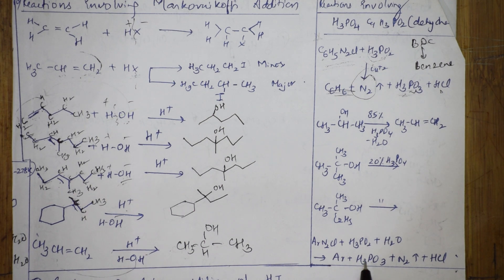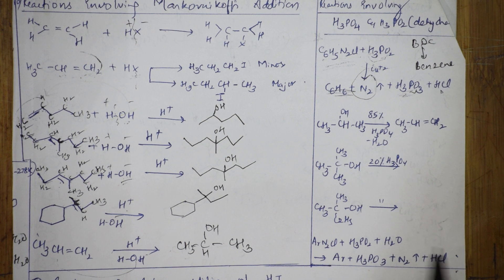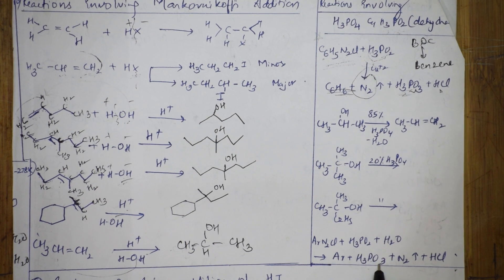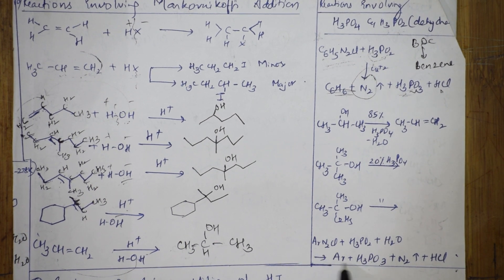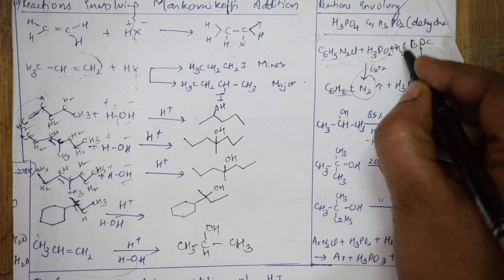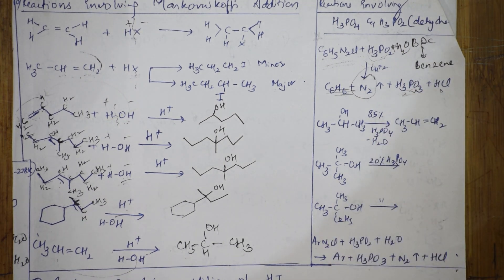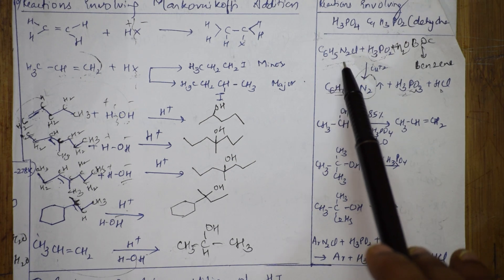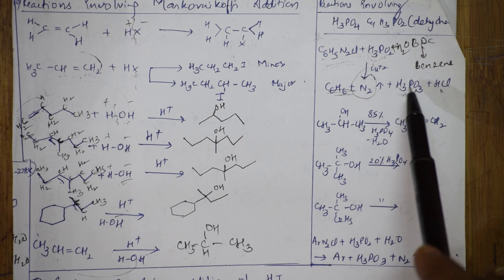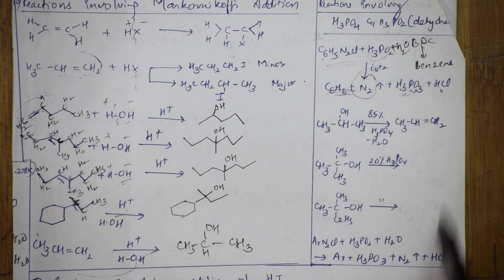Here they have given us BDC again with H₃PO₂ and hydrolysis. The same concept applies: nitrogen gas escapes out, H₃PO₂ converts to H₃PO₃, benzene (C₆H₆) is formed, and HCl is produced. You can also write the water molecule. So with H₃PO₂ there are only two reactions in the book — both form benzene from BDC, with nitrogen gas, H₃PO₃, and HCl as products.